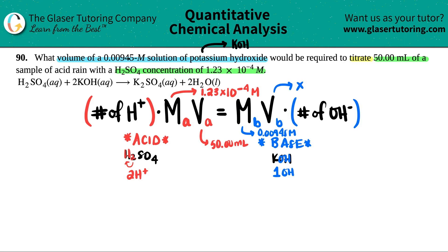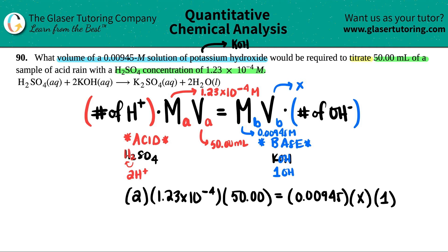Now we have one variable. Let's plug it in. Let's start from left to right. So remember, we said that we had two H pluses in H2SO4 times it by that molarity, 1.23 times 10 to the negative fourth times by 50. I don't put the units in here because I know that they're correct. I just run with the numbers. The base side, the molarity is 0.00945. We're solving for the volume. And then we said that the total number of OHs in KOH was only one.